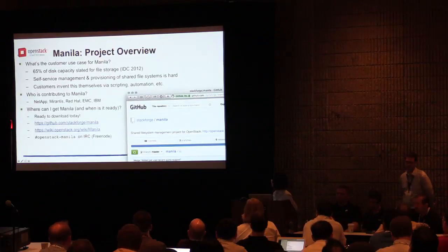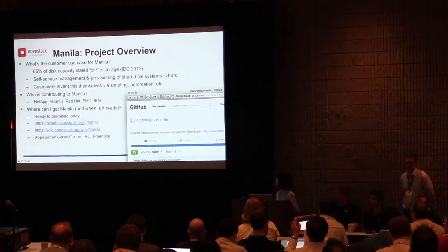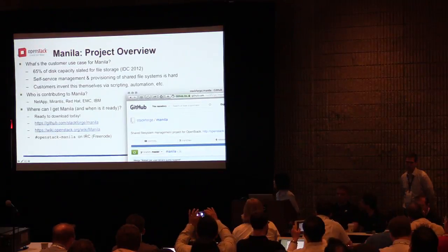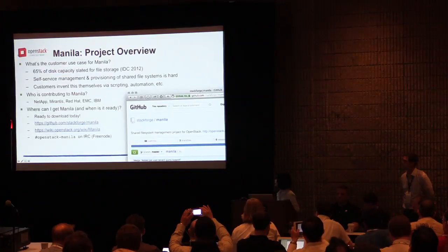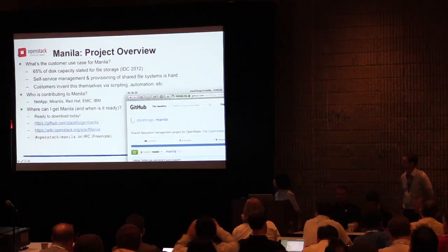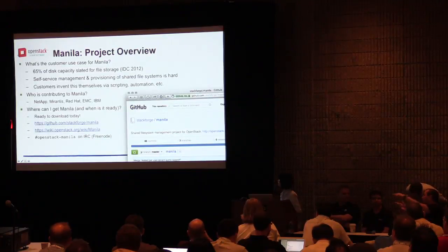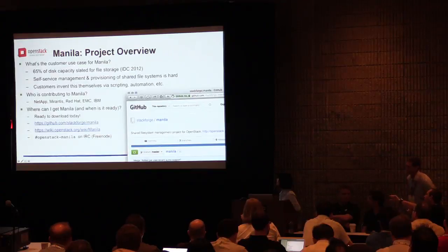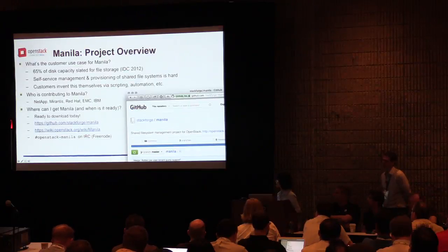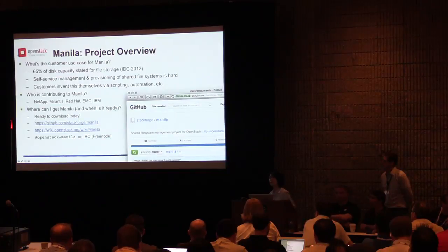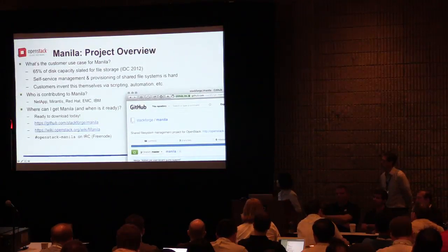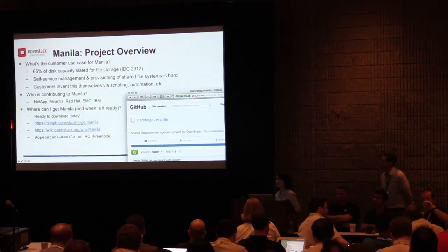According to the 2012 IDC report, file storage accounts for over 65% of total disk capacity in 2012, and file-based storage continues to be a thriving market. Spending on file-based storage solutions is expected to reach $34.6 billion in 2016. Without automation, it is very difficult to provision and manage shared file systems, and customers will have to work around the problem by scripting or automating themselves. Manila, which provides shared file systems as a service, automates the process and makes it easy for guests to have access to the file systems, facilitating management and provisioning in OpenStack cloud.